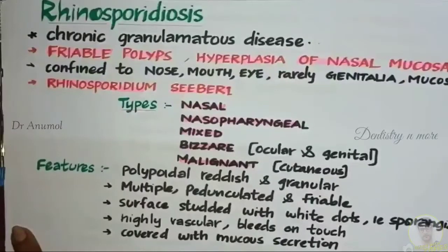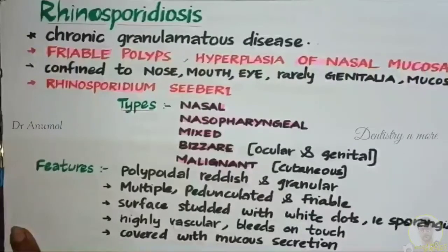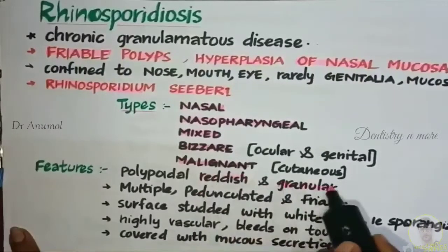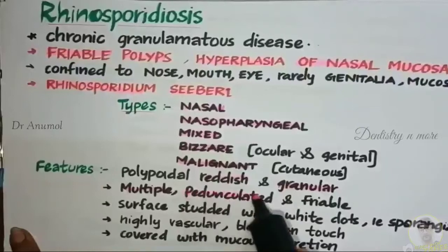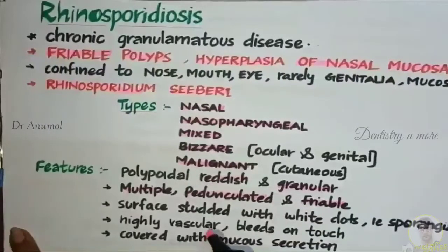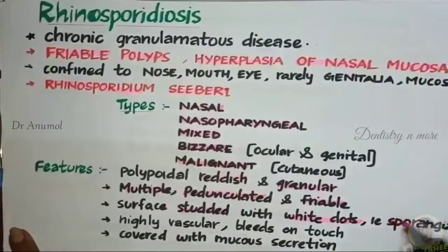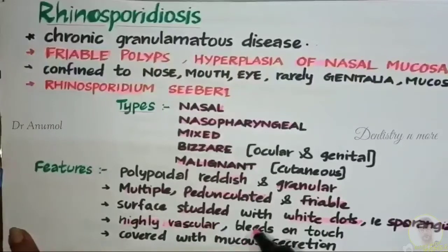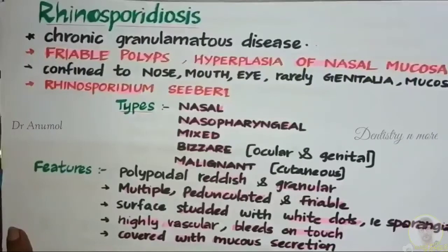Polyp formation is the classic feature of Rhinosporidiasis. The polyps are usually reddish in color, granular, multiple, pedunculated, and friable. The surface of the polyps is studded with white dots, which are believed to be sporangia. The polyps are highly vascular and due to this high vascularity they will bleed spontaneously on mild touch. The polyp will also be covered with mucus secretion.